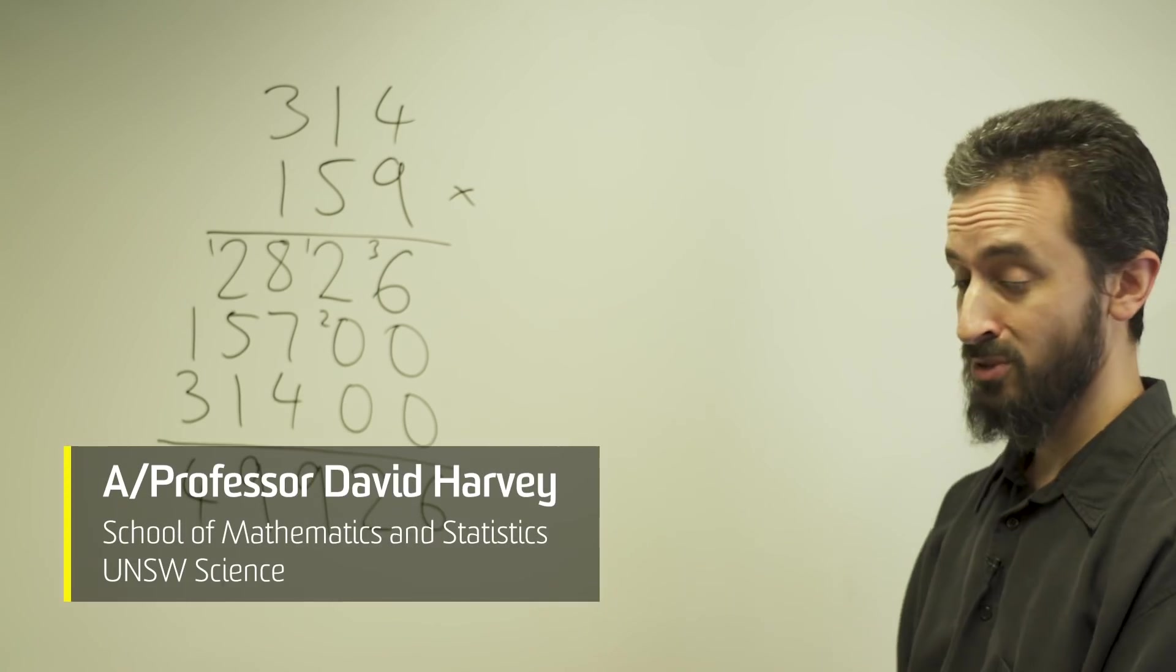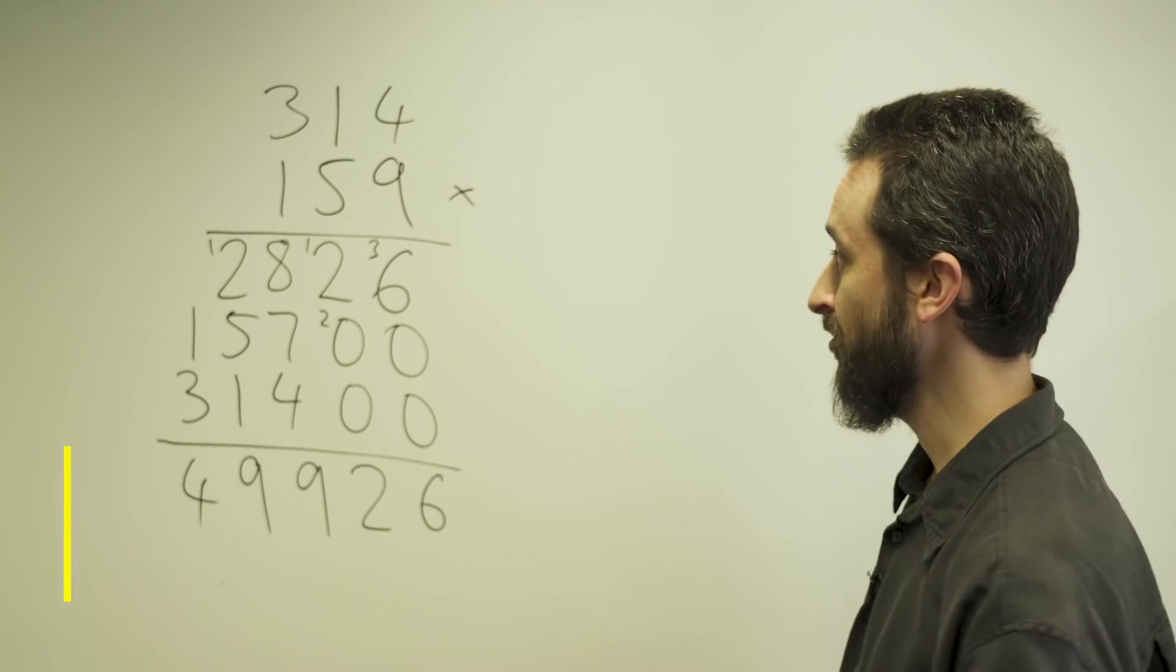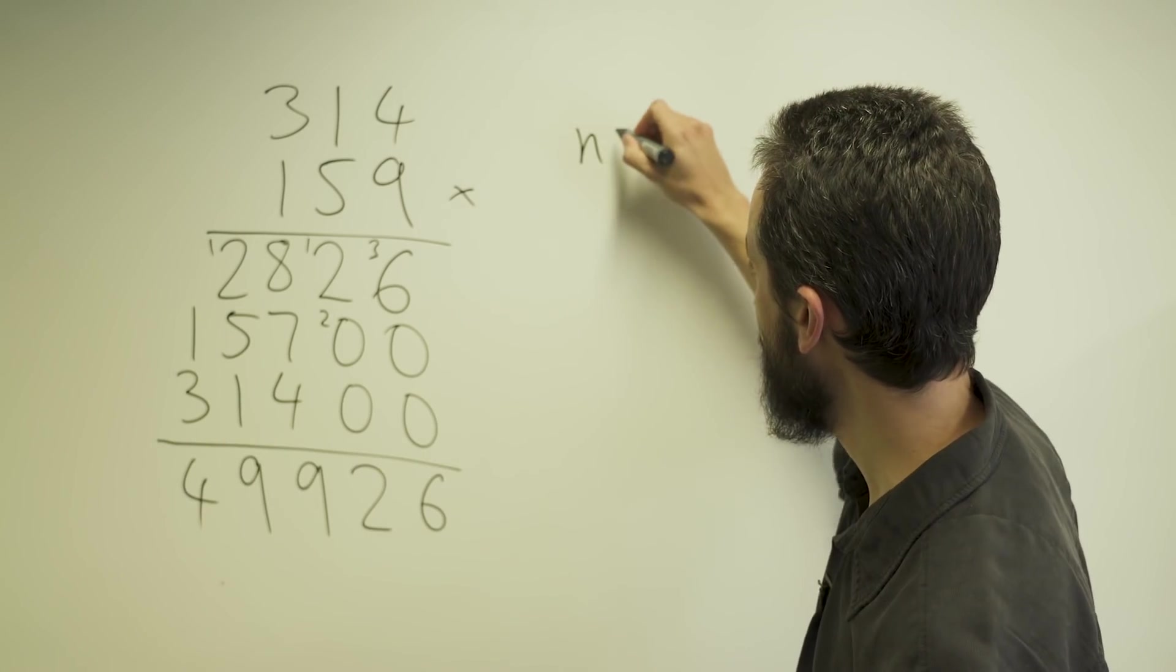Here is a multiplication problem that I prepared earlier. I'm multiplying two numbers with three digits, so here my n, the number of digits, is 3.